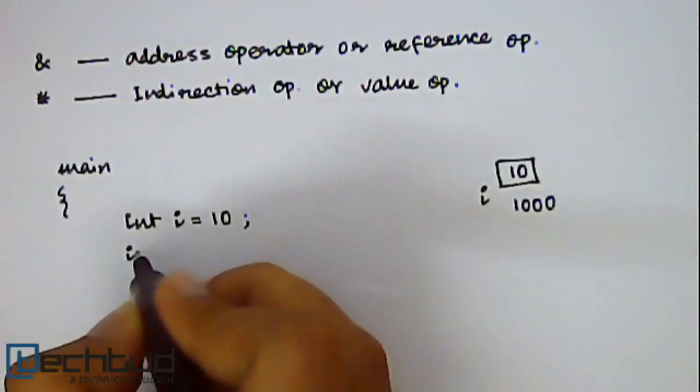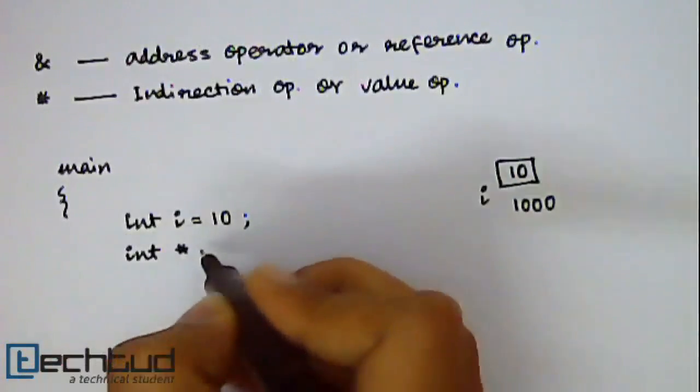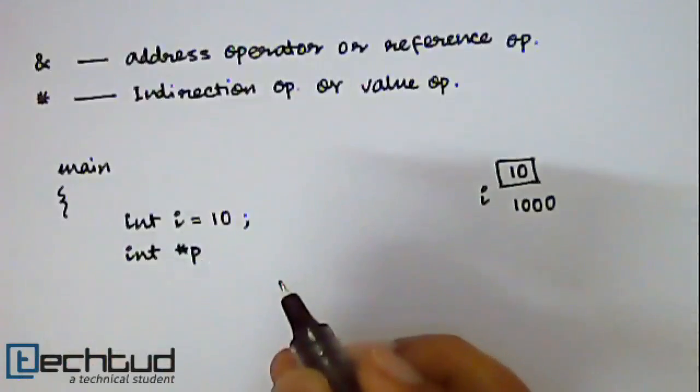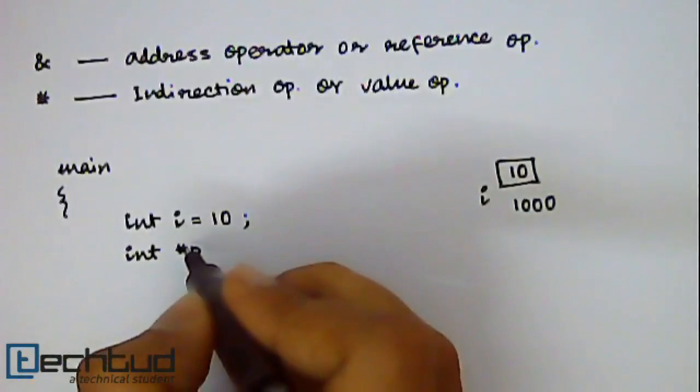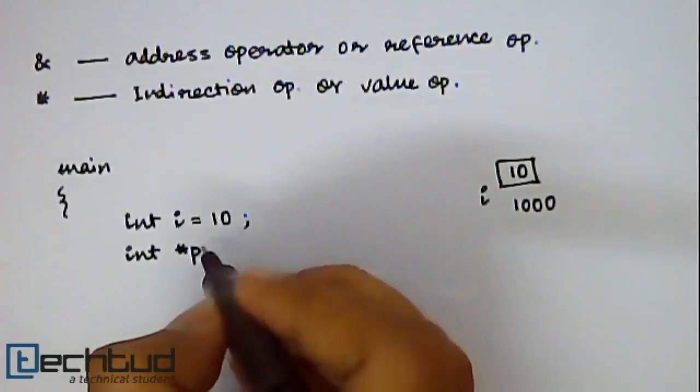So you just need to write int star sign and your pointer variable name. So this int star will define that p is a pointer variable of type int.